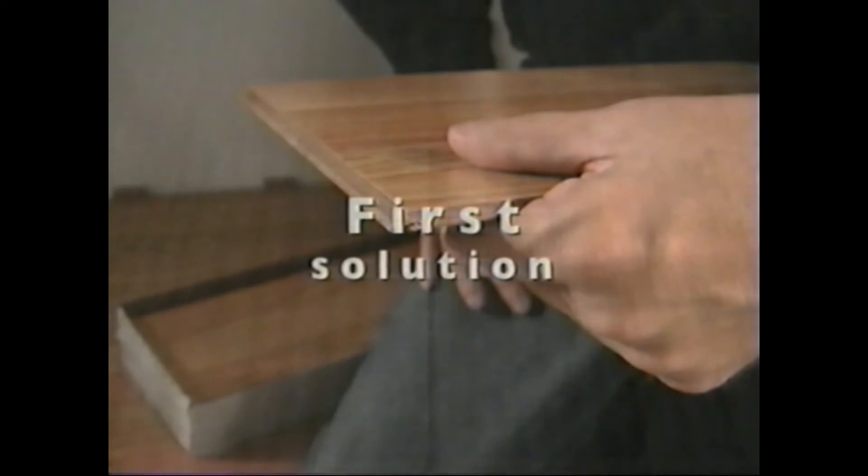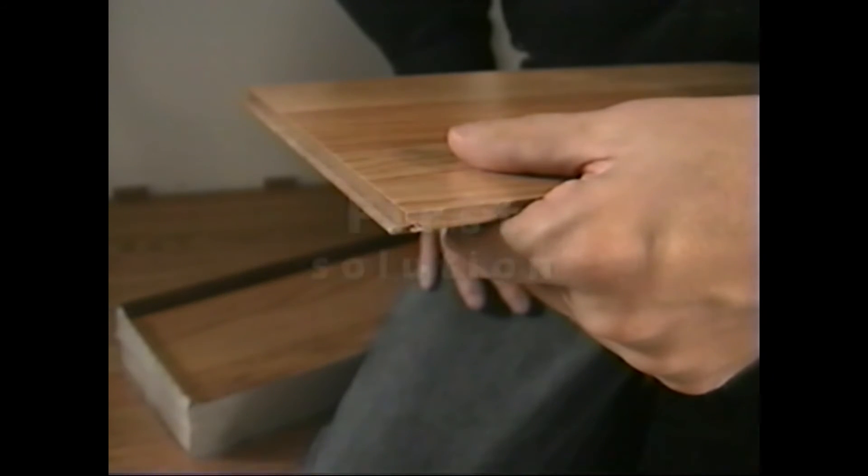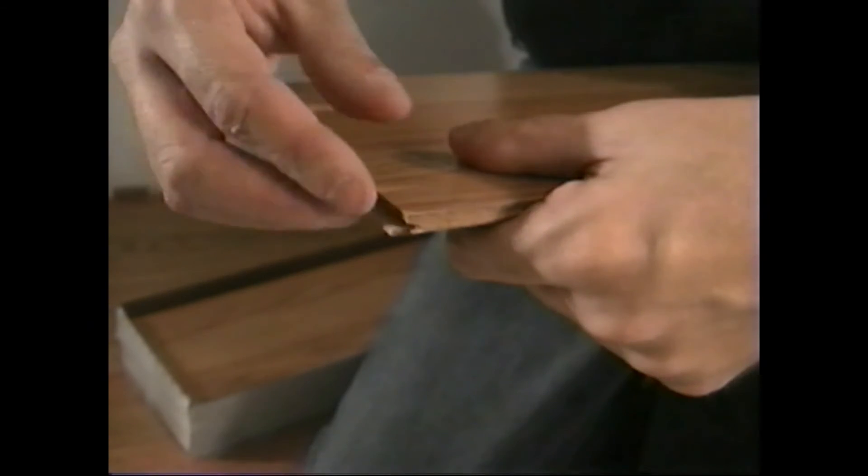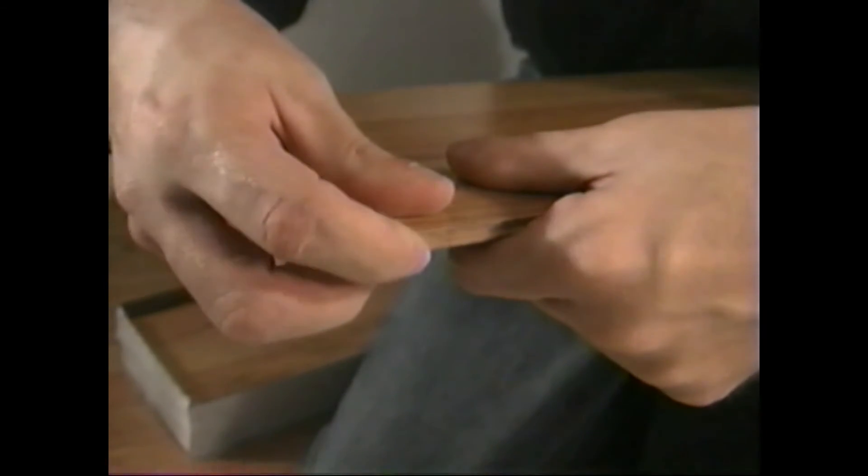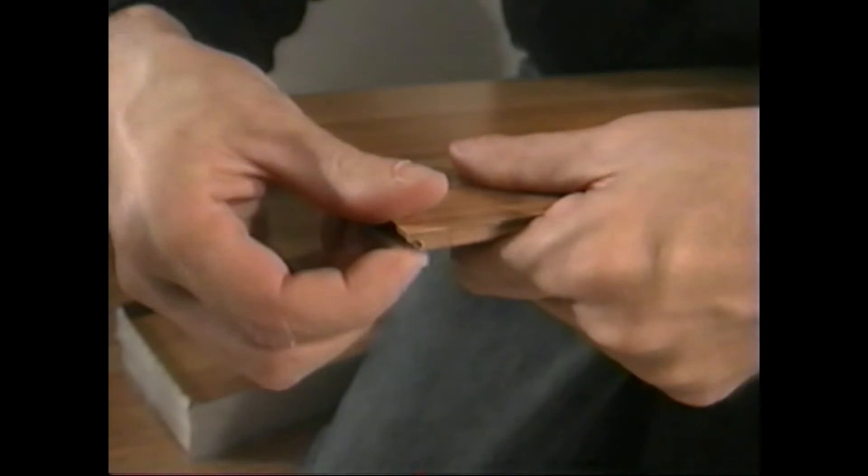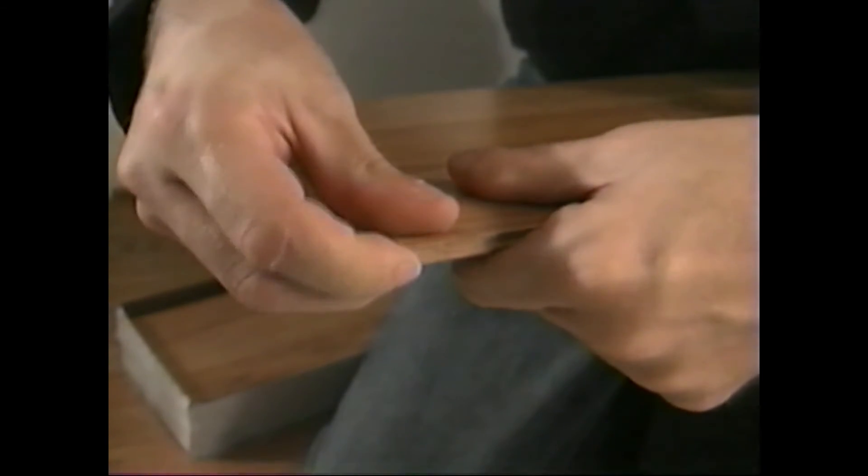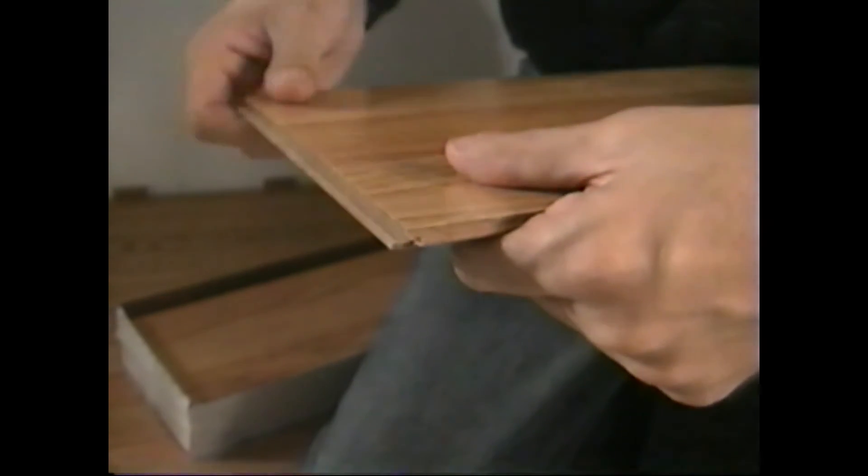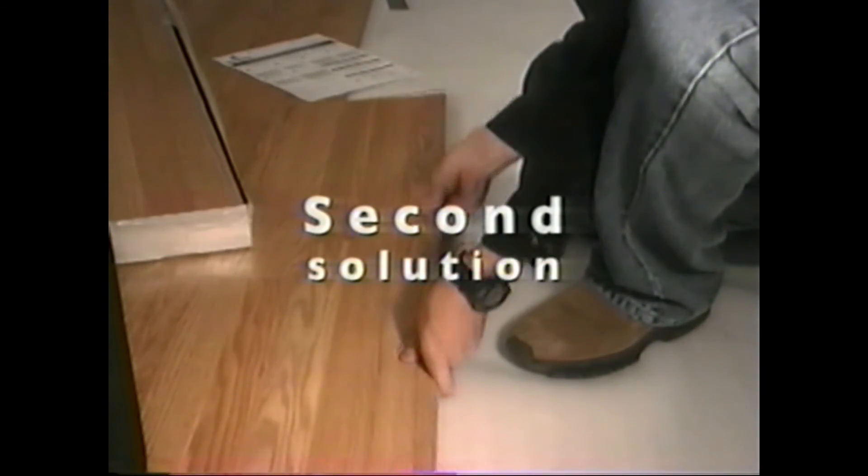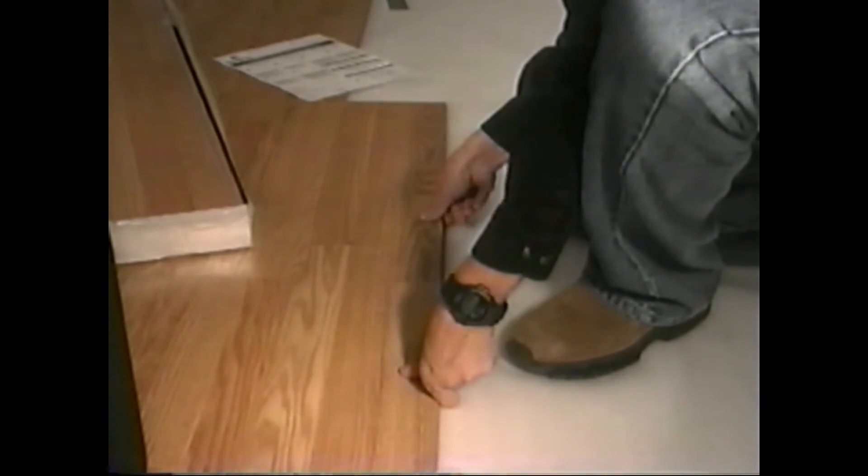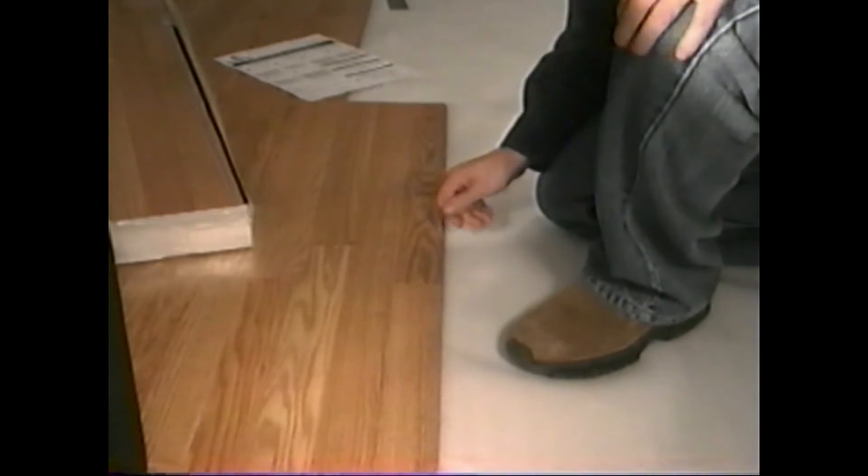When installing the product, there are gaps between the boards. There are three possible solutions. First solution: check the tongue and groove for manufacturing debris. Second solution: lock into place by using manual pressure.